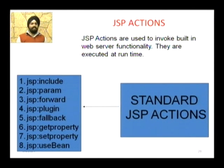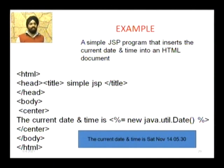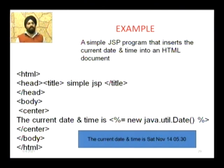The last thing is JSP actions. Basically, there are eight standard actions available: JSP include, JSP param, forward, plugin, fallback, get property, set property, and use bean. The last example shows HTML with head, body, and center tags. You can see the current date and time displayed — I used the expression tag for this. I will save the file with a .jsp extension.